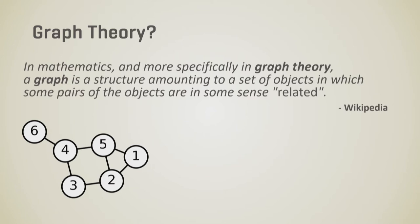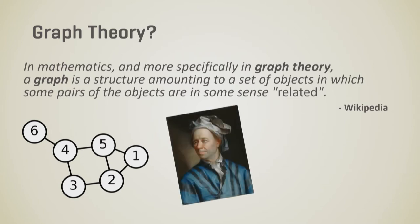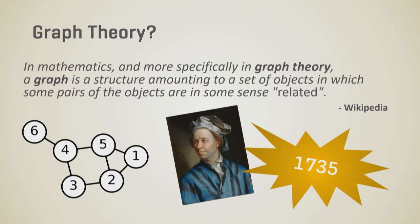In graph theory, five is related to four, two, and one — there are links between them. And despite being discussed as a new technology, this originally started with Leonard Euler in 1735. So we're not talking about something brand new.